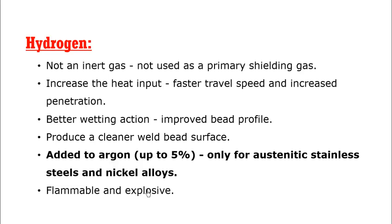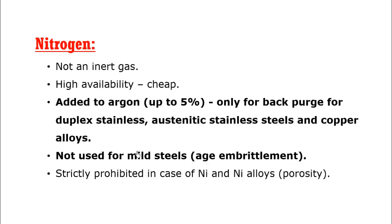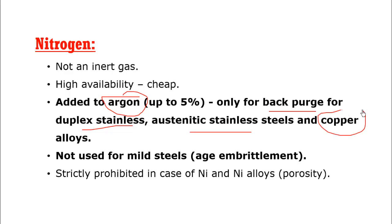Hydrogen is used in very small amounts — less than 5% — with argon for austenitic stainless steel and nickel alloys. A mixture of argon and hydrogen can be used for welding austenitic stainless steel and nickel alloys. Nitrogen is also added with argon; a mixture of argon and nitrogen is used with nitrogen less than 5%, and it is helpful during back purging of duplex stainless steel, austenitic stainless steel, and during welding of copper alloys.